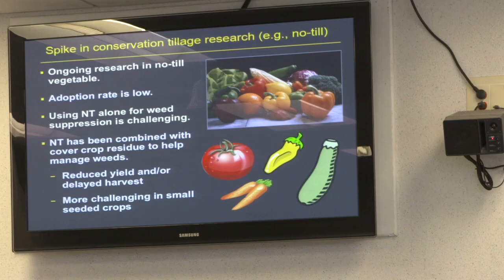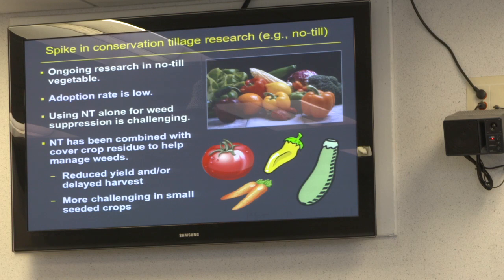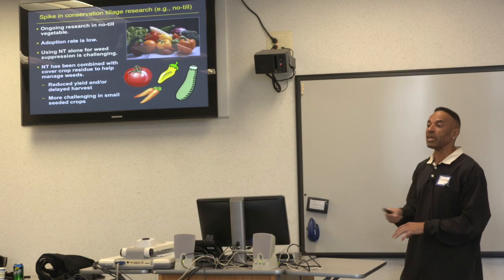There has been a spike in conservation tillage research in vegetables. No-till is well-adopted in cotton, corn, and soybeans, but in vegetables adoption is very low and lagging. One major problem is weed suppression — especially in organic farming. There's also the issue of warm-season vegetables: the vegetation on the surface keeps the soil cool, causing yield drag or delayed harvest. Small-seeded vegetables like carrots don't do well in no-till situations either.